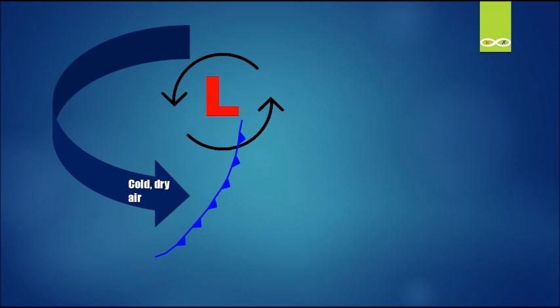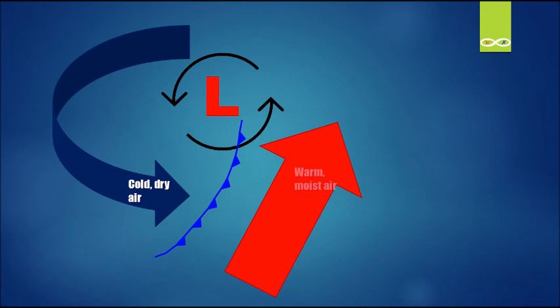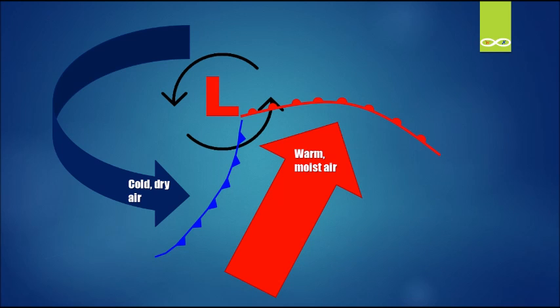Coming in from the south is warm moist unstable air. This is the air that's pushing a warm front northward. And finally there is a flow of cool air moving in from the east to the west — that is our cool air flow.